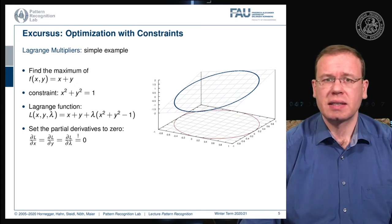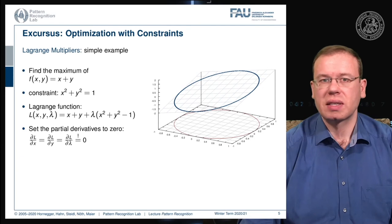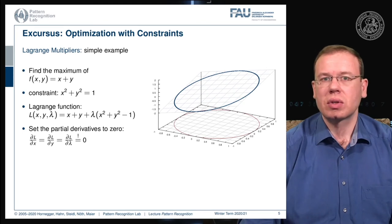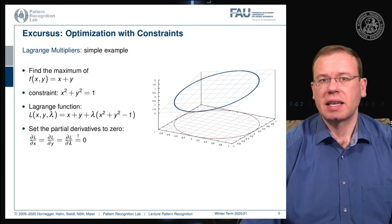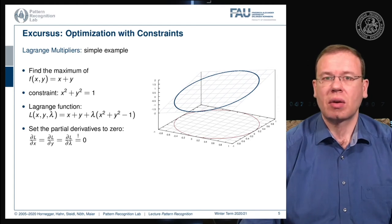In engineering-oriented classes, lambda is sometimes treated as a user-chosen constant, where any violation of the constraint introduces cost. Choosing lambda appropriately forces solutions toward the circle. However, mathematically, lambda is an increase in dimensionality and is actually one of our search variables, so we solve the optimization problem in this higher-dimensional space.